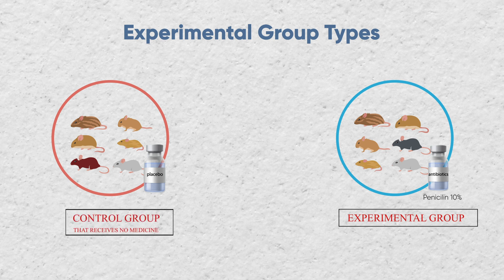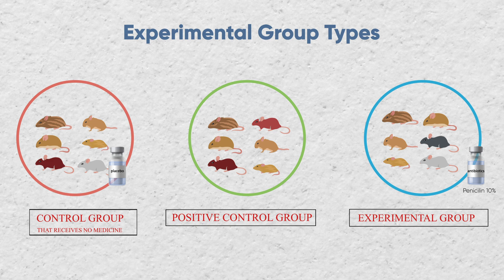In this example, we only had two groups — one control and one experimental. However, if you want to increase the reliability of this experiment, you can add one more group, which you can call a positive control group, where you test an existing antibiotic that is already known to kill bacteria. For example, the existing antibiotic is Penicillin 20%, which is already in the market and is known to work against bacteria.